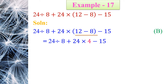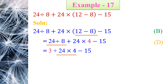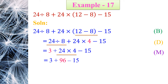After B, the next letter is D for division. So 24 ÷ 8 should be solved next. On dividing 24 by 8, we get 3 + 24 × 4 − 15. The next step is M for multiplication. Here, 24 × 4 is the multiplication. On multiplying, it becomes 3 + 96 − 15.